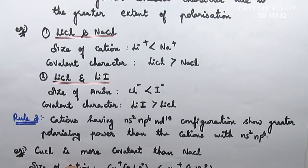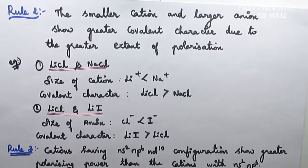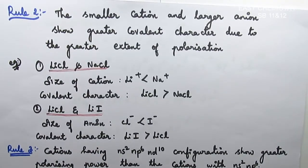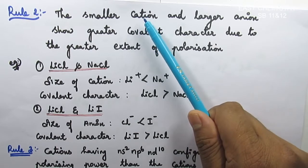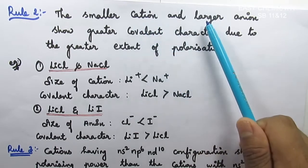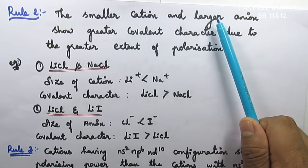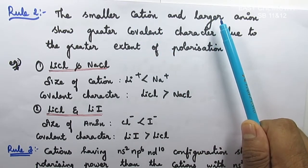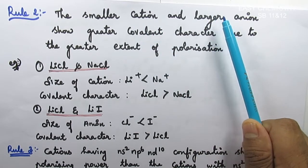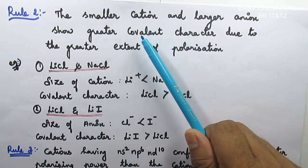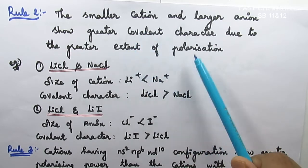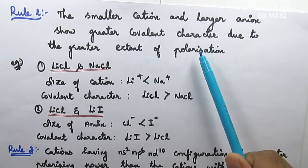Rule 2: the size of the cation and anion matters. Smaller cation size leads to greater covalent character, and larger anion size also leads to greater polarisation.